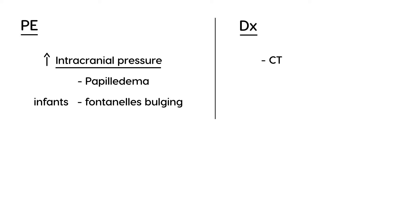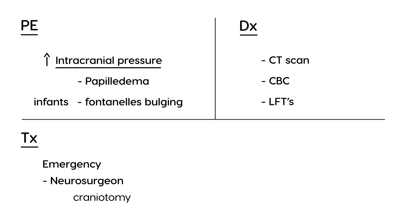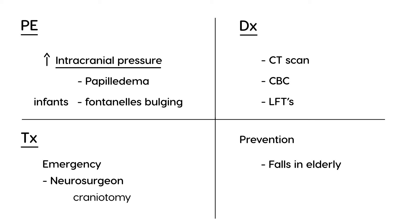To diagnose this, imaging — CT scan — without a doubt, as quickly as possible once you have a suspicion of a subdural or any intracranial bleed. A CBC and liver function tests are also helpful, especially in alcoholics. Treatment is a neurosurgical emergency: a neurosurgeon performs emergent craniotomy and drains the blood. For prevention, one of the biggest causes is falls in the elderly, so ensuring the home environment is safe and free of tripping hazards is critical.